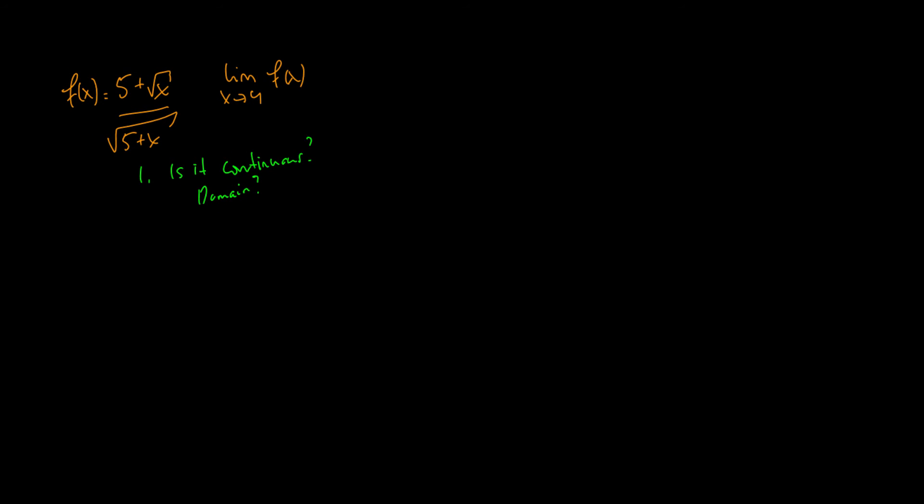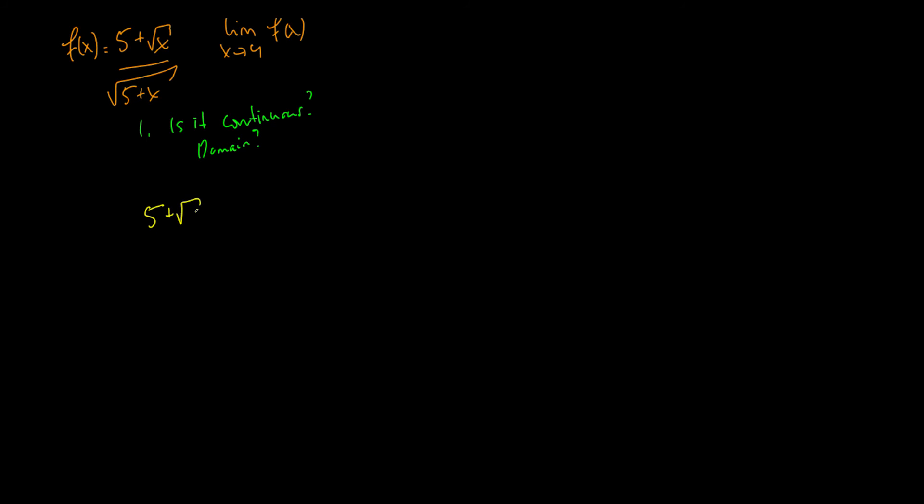Alright so hopefully you should have had enough time to try this problem. If you struggled that is okay but we're gonna test this out right now. Okay so first we take a look at the numerator and we say 5 plus root x. Where is this continuous? Well this is a polynomial. So what does this mean? This is of the form 5 plus x to the half. So we say it's continuous on all real numbers. Not quite because if it's under a square root x cannot be negative. So x has to be zero or greater. So we can say that the numerator is continuous on [0, infinity).